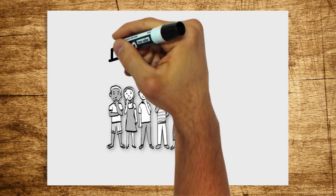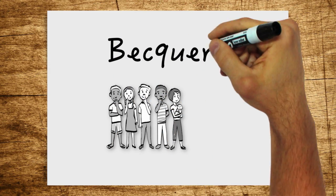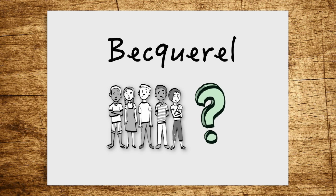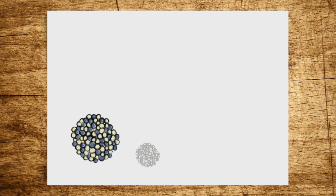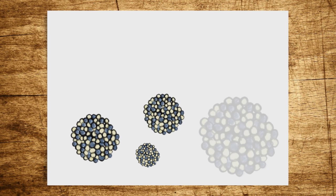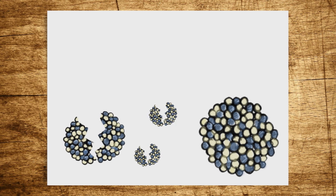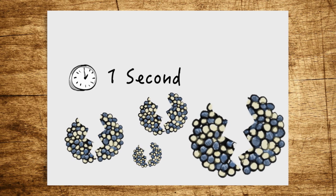When it comes to radioactivity or radiation, the term Becquerel keeps popping up. But what does it actually mean? Becquerel is a physical unit that specifies how many atomic nuclei decay in a substance in one second on average.